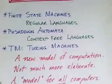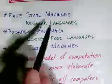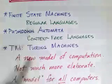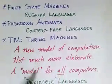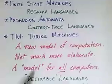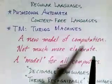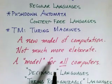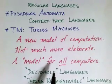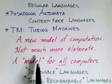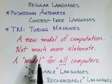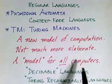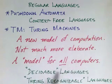The finite state machine is a very simple model of computation, and likewise the pushdown automata is a simple model of computation. Turing machines are also simple — not much more elaborate — yet the additional power that they have seems to be a substantial increase in power. In fact, the Turing machine model of computation is sufficient to describe all kinds of computers. It's a very, very powerful model.